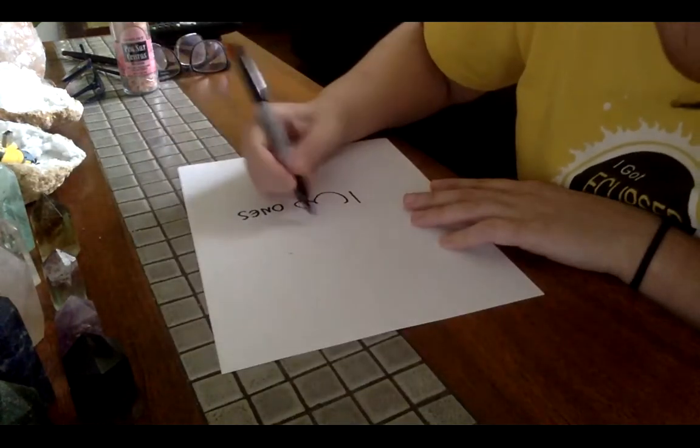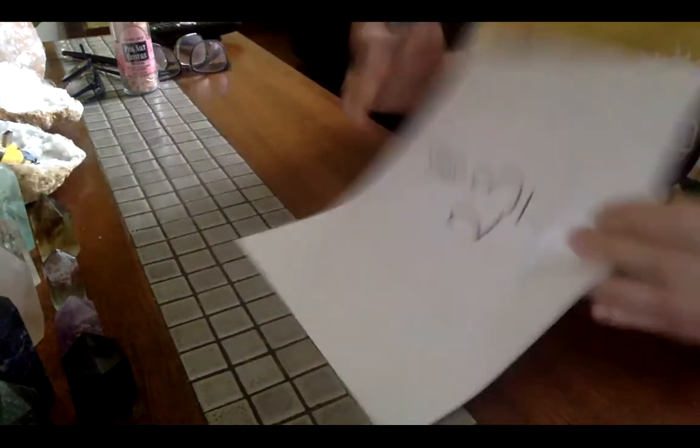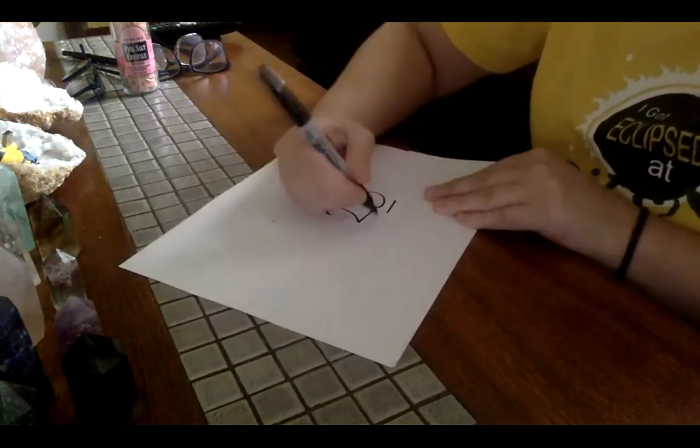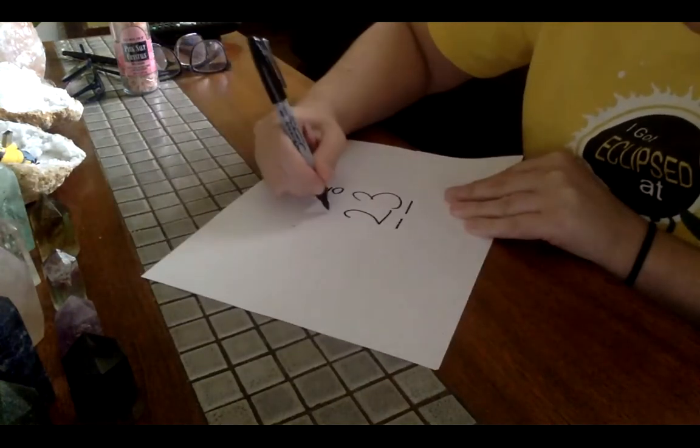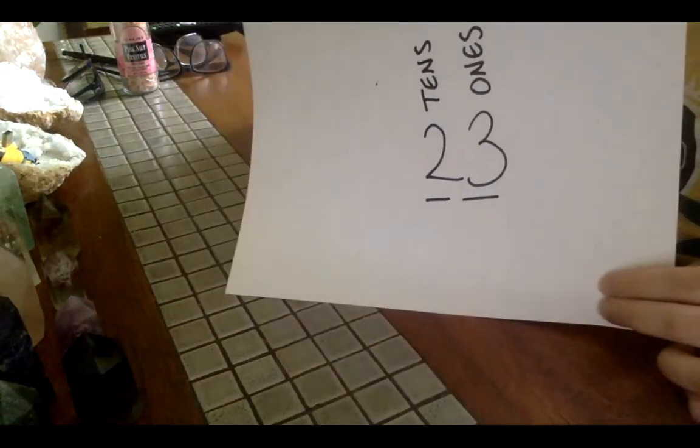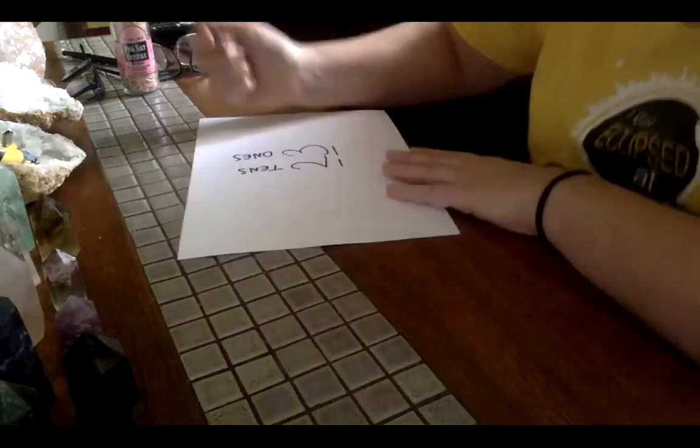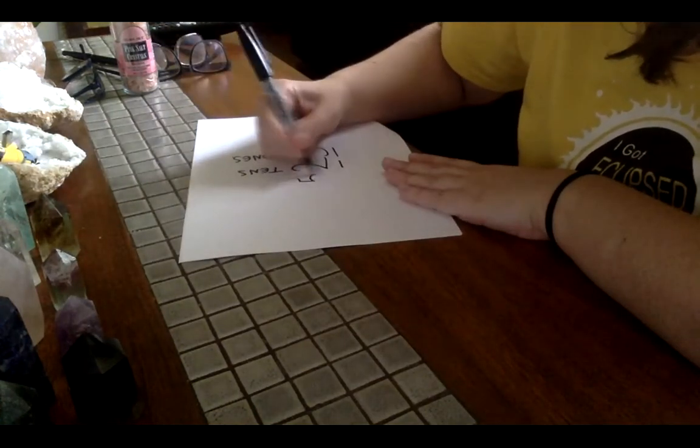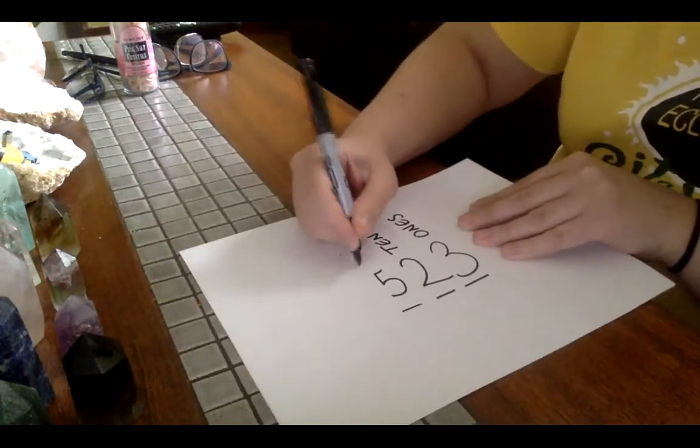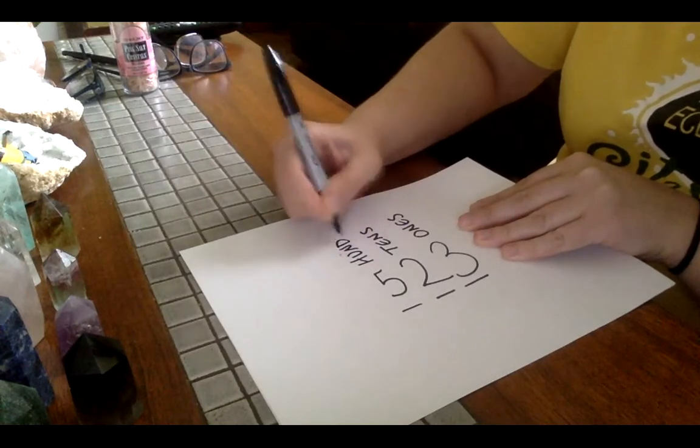Now, let's say I have a number that looks like this, 23. I have two places. And this is my tens place. Going to add another number. And now we have three places. And this is my hundreds place.